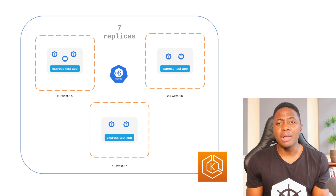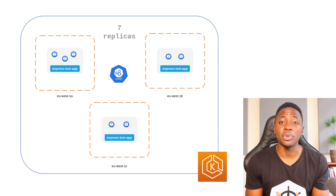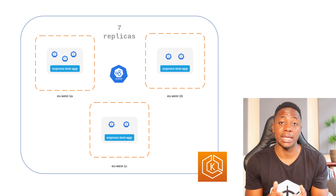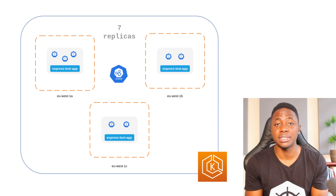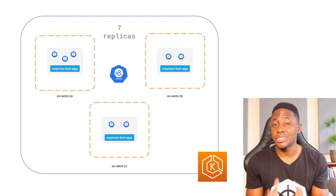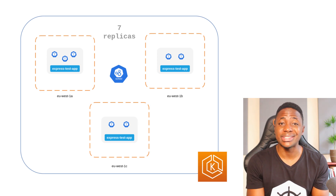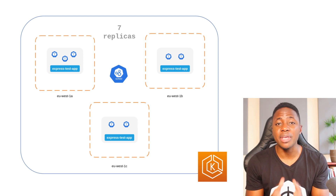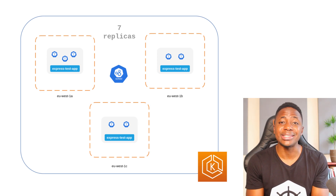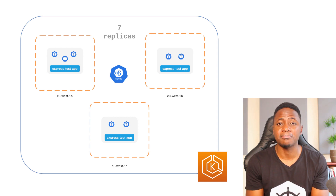To achieve workload availability, I'm going to use Pod Topology Spread Constraints. Topology Spread Constraints allow you to make your application available across different failure or topology domains like hosts, AZs, or regions. This approach works very well when you're trying to ensure fault tolerance as well as availability by having multiple replicas in each of the different topology domains.